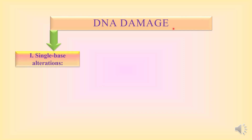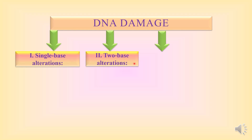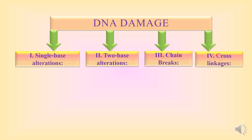Now let us look at what DNA damage is. There are four types: the first type is single base alteration, the second type is two base alteration, the third type is chain breaks, and the fourth type is cross linkages. So these are the four types of DNA damage — that is the classification.